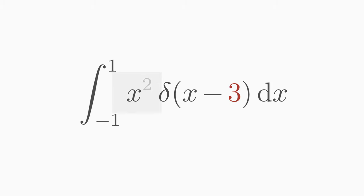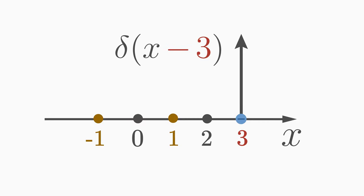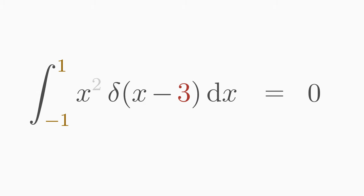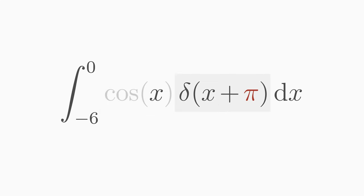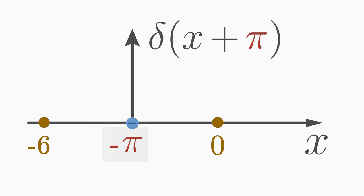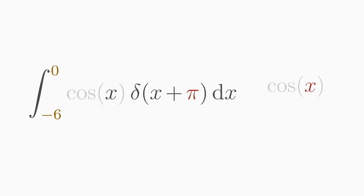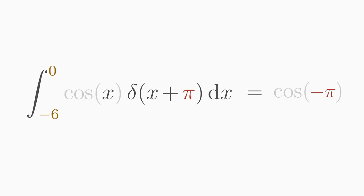Here we integrate x squared with delta of x minus 3, but not from minus infinity to plus infinity — from minus 1 to 1. We must first ensure that the delta function is inside the integration limits. The delta function is shifted to x equals 3, which is outside the upper integration limit, so the integral is zero. Next, we integrate cosine of x multiplied with delta of x plus π, from minus 6 to 0. The delta function is at x equals minus π, which is within the integration limits. Evaluating cosine at minus π yields the value of the integral: minus 1.